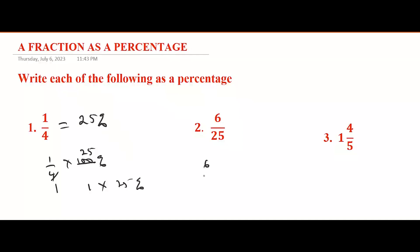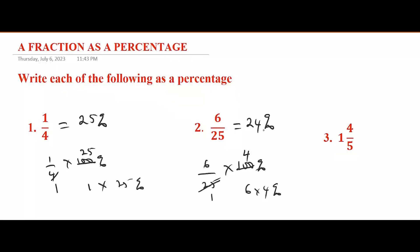For 6/25 as a percentage: 6/25 times 100%. 25 goes into 100 four times, so we have 6 times 4 percent, which equals 24 percent. So six out of 25 is equal to 24 percent.